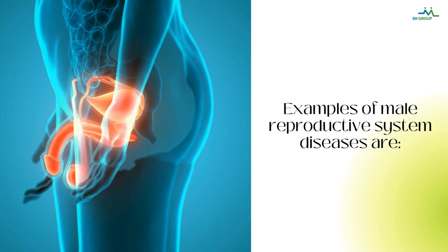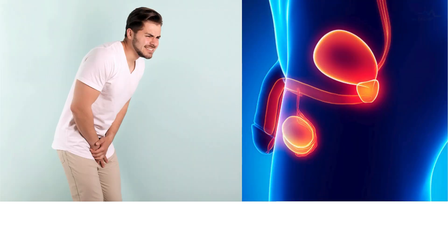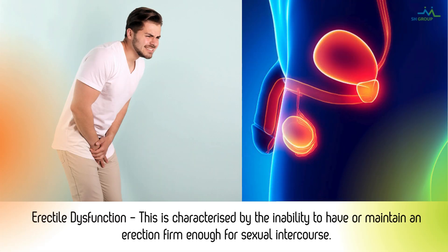Examples of male reproductive system diseases include erectile dysfunction, which is characterized by the inability to have or maintain an erection firm enough for sexual intercourse.